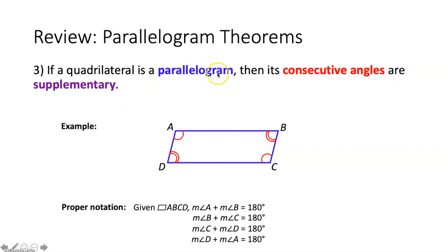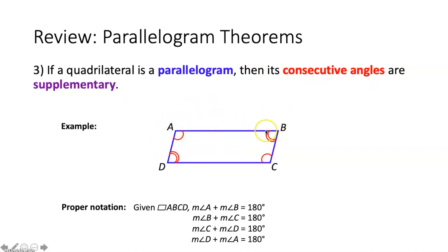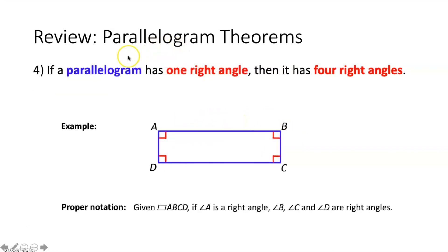The third parallelogram theorem says if a quadrilateral is a parallelogram then its consecutive angles are supplementary. Consecutive angles are angles that share a side — so angle A and angle D, angle A and angle B, angle B and angle C, angle C and angle D. Those pairs are consecutive angles, and in a parallelogram their measures add up to 180 degrees.